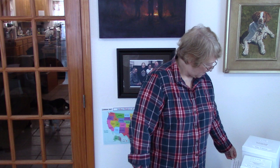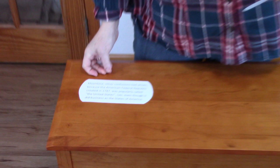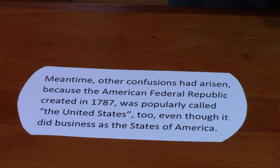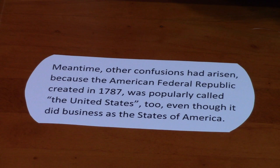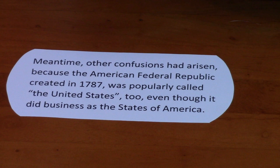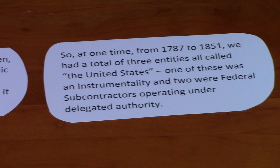This is important to know — another confusion. Another confusion had arisen because the American subcontractor, the Federal Republic, was popularly called the United States too. So at one time from 1787 to 1851, we had a total of three entities calling themselves the United States, all using the same style and name. How's that for a mind-boggling confusion?